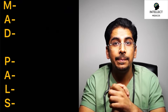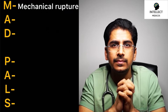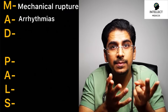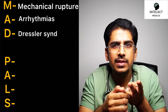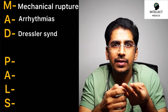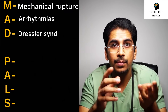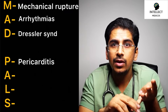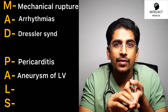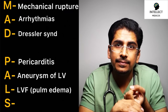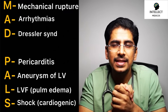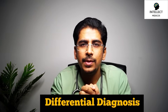Complications of MI can be remembered using the mnemonic MAD PALS: M = mechanical rupture (left ventricular free wall, interventricular septum, or papillary muscle rupture); A = arrhythmias; D = Dressler syndrome (post-MI autoimmune syndrome developing 2-3 weeks after MI, presenting as pericarditis or pleural/pericardial effusion); P = pericarditis; A = aneurysm of the left ventricle; L = LVF or pulmonary edema; S = shock, mainly cardiogenic shock.